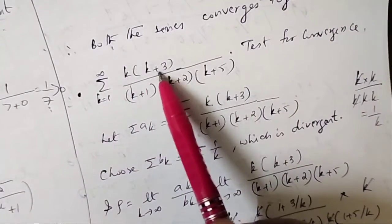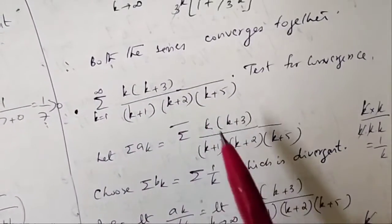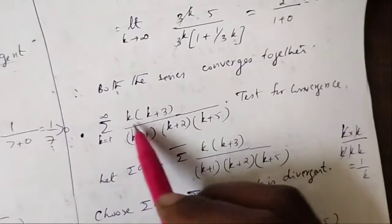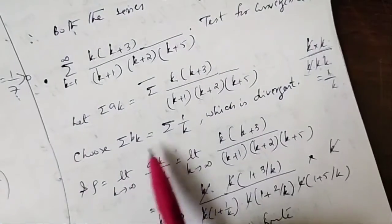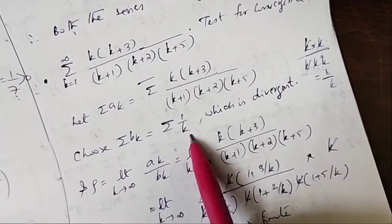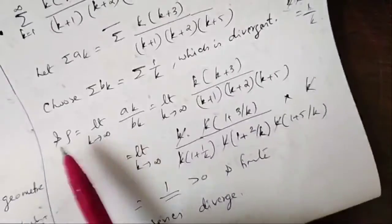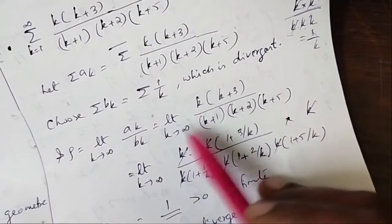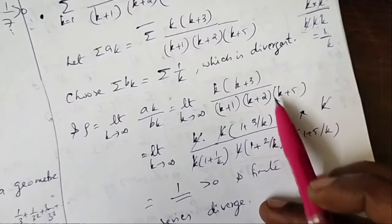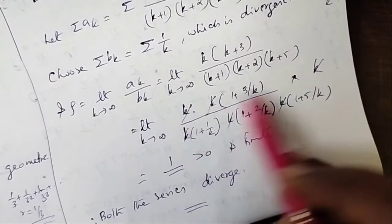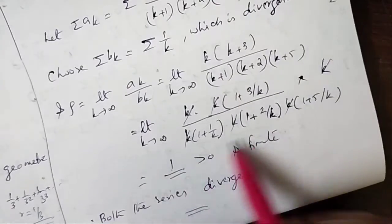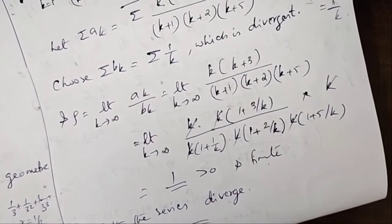Next: σ k(k+3)/[(k+1)(k+2)(k+5)]. The maximum power: numerator is k², denominator is k³, so the dominant behavior is 1/k. Choose σbk = σ(1/k), which is divergent. Finding ρ by taking k common from all factors and canceling, we get a finite positive value. So both series diverge.